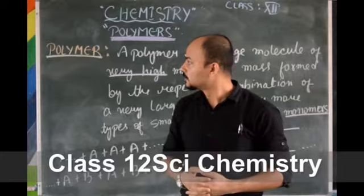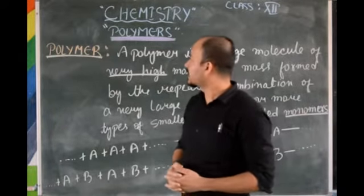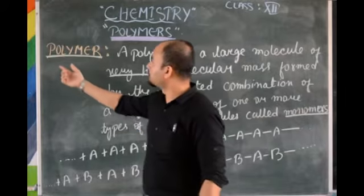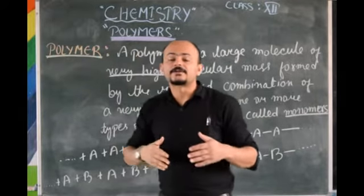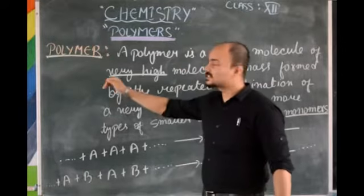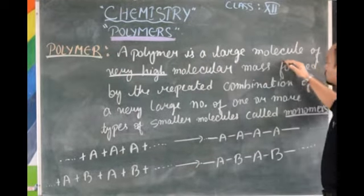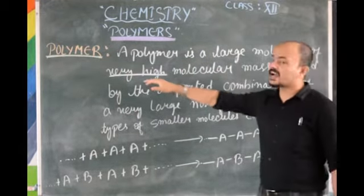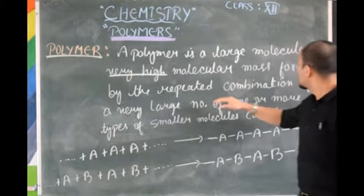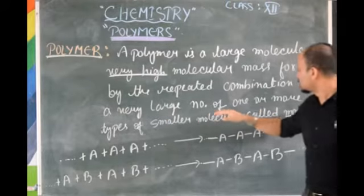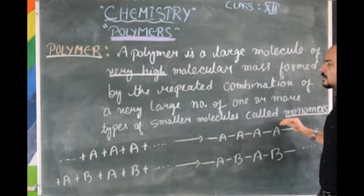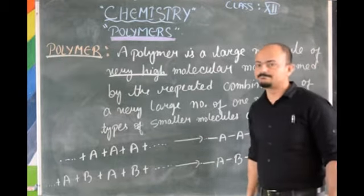Welcome back, dear students of class 2L. Today we will be starting with a new chapter, that is polymers. The name itself suggests: poly means there are many repeating units. A polymer is a large molecule of very high molecular mass formed by the repeated combination of a very large number of one or more types of smaller molecules called monomers.